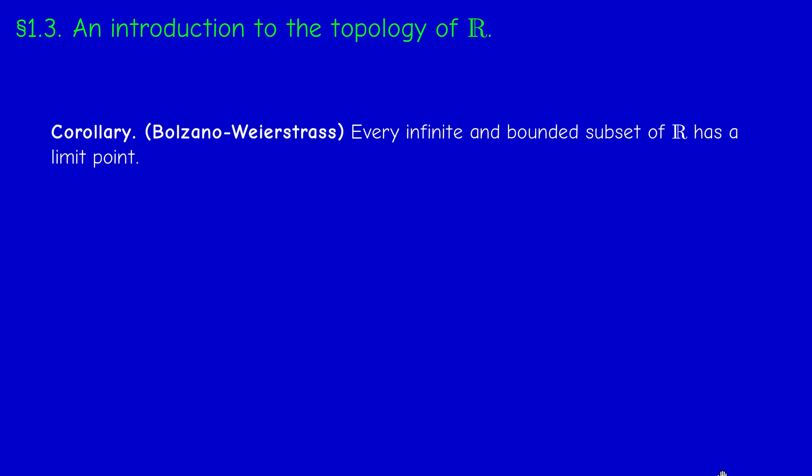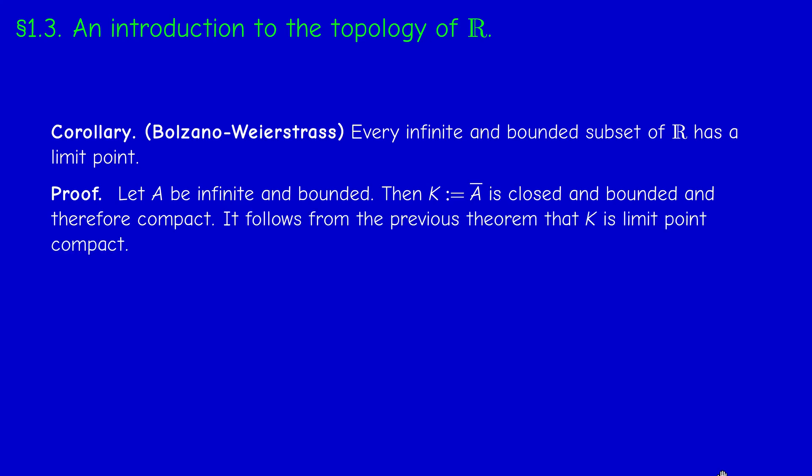In practice, let us just draw some conclusions from this deep theorem. The first corollary is known as the Bolzano-Weierstrass theorem. It states that every infinite and bounded subset of R has a limit point. Proof: Let A be infinite and bounded. Then K := A̅ is closed and bounded and therefore compact. It follows from the previous theorem that K is limit point compact. Therefore A has a limit point in K.